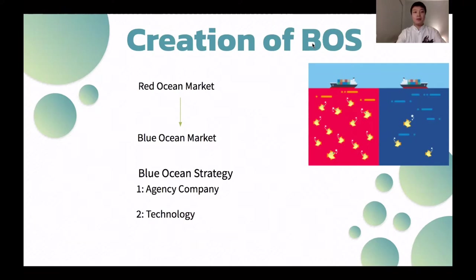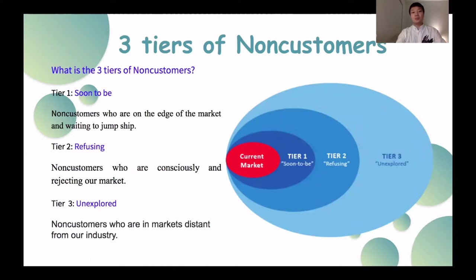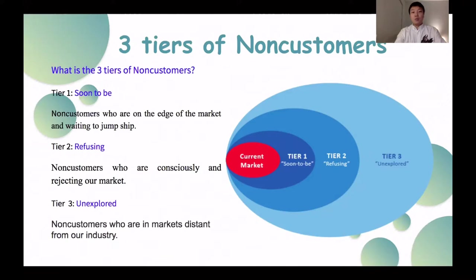The first tier is soon-to-be non-customers, who are on the edge of the market and waiting to jump ship. These customers might be unsatisfied with their current company and will leave if they find a better option. The second tier is refusing non-customers, who consistently reject our products and services. The third tier is unexplored non-customers, who are distant from our industry and have never been considered a target market by other companies.